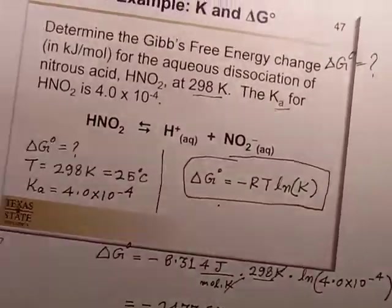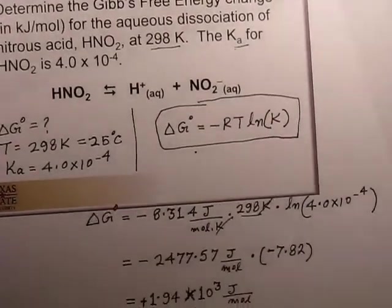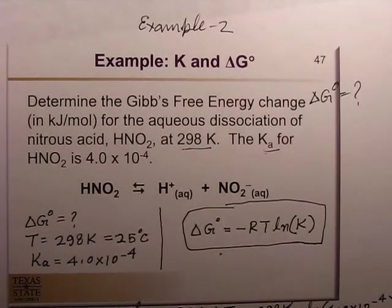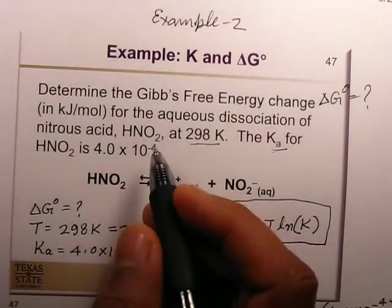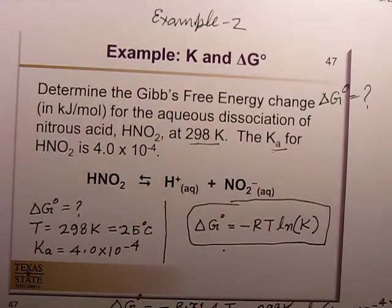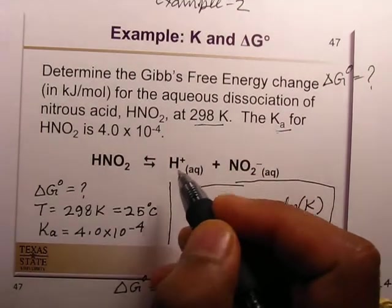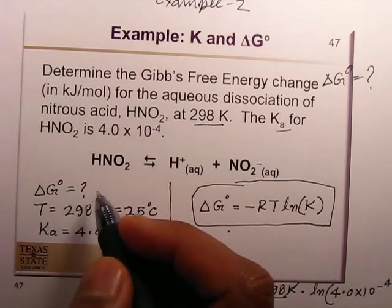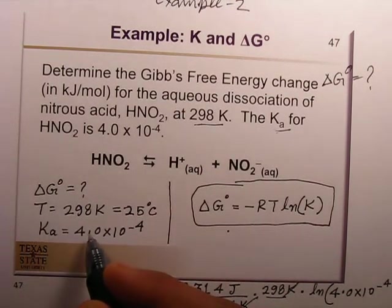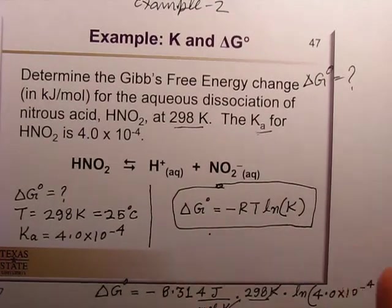The second example: determine the Gibbs free energy change delta G° in kilojoules per mole for the aqueous dissociation of nitrous acid at 298 Kelvin. The Ka for this reaction is given. Nitrous acid is in equilibrium with hydrogen ion and nitrite ion; temperature and K are given, so we use the equation delta G° equals minus RT·ln(K).